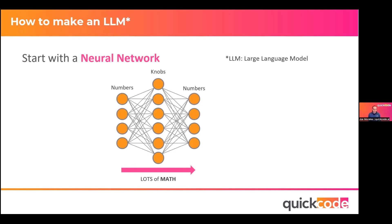Then you push it through these knobs. These are really called parameters or weights — I call them knobs because you can adjust them, and that's how you train a neural network, by tweaking these knobs. It's similar to tuning a radio station, which has one knob. You start with noise, get it close to the station, and you can hear it dialing in. You tweak it, listen, tweak a little more — it sounds better. You overshoot, you come back. That's how these things are trained too. You push numbers through the knobs, which is basically lots and lots of math, and you get numbers on the right. If those aren't what you expected, you tweak the knobs and do it again, until the numbers on the right are exactly what you expected. And then you've got a trained neural network.